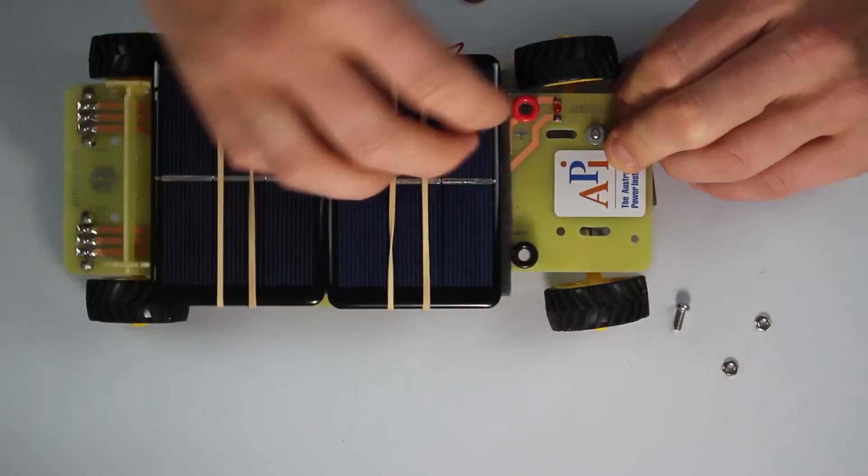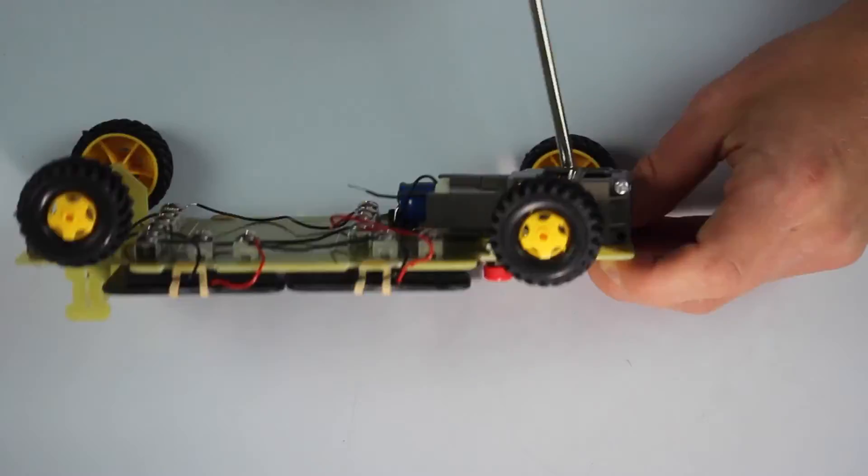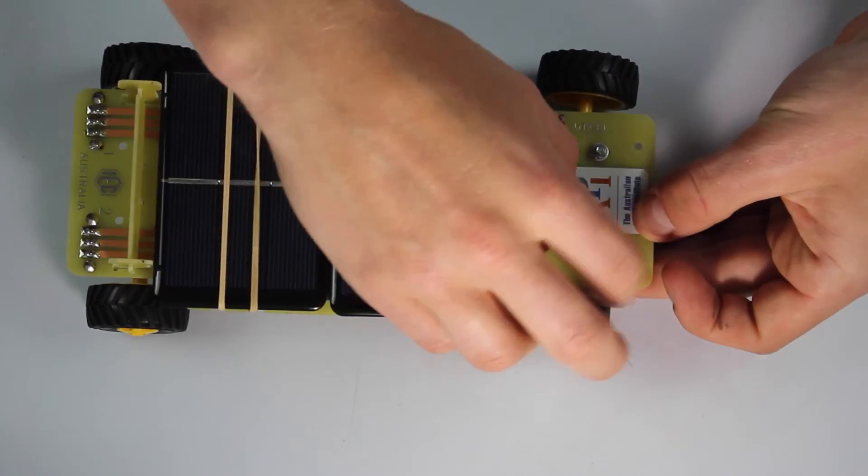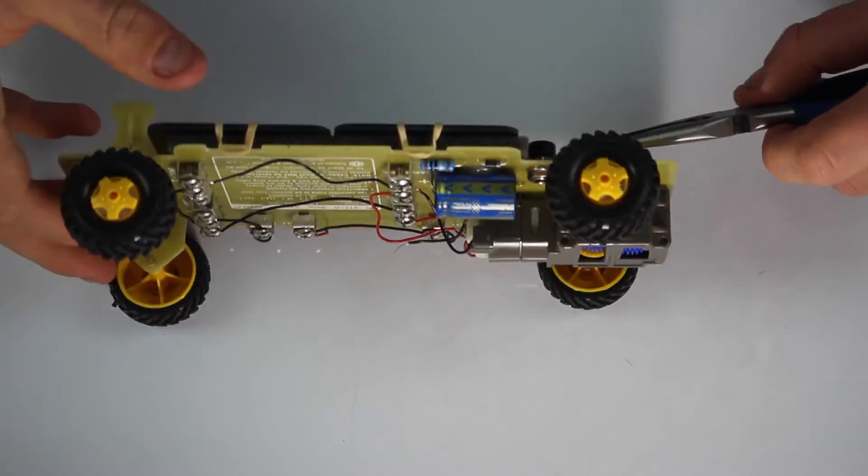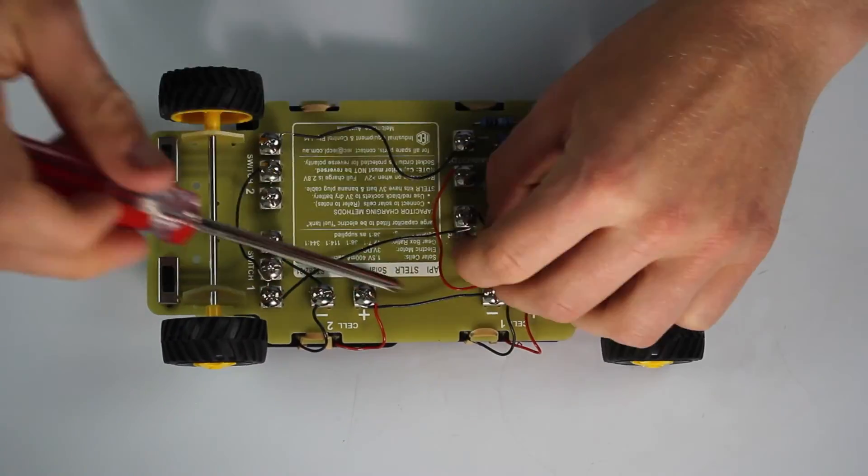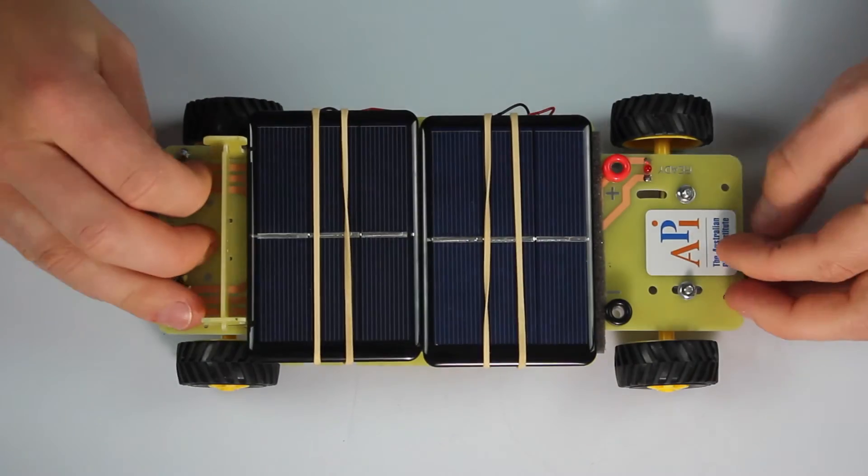Then, using the screws, nuts and washers that we left aside, we can put the electric motor and gearbox combination back onto the solar car. Don't forget to reattach the electric wires of the motor. Have fun racing!